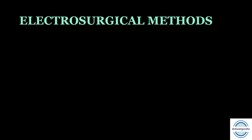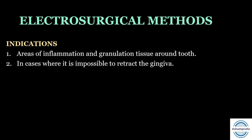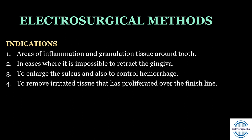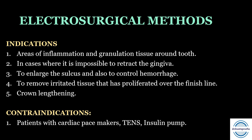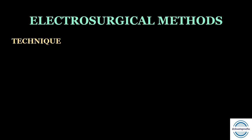Indications for electrosurgical methods: areas of inflammation and granulation tissue around the tooth; cases where it is impossible to retract the gingiva with retraction cords; to enlarge the sulcus and control hemorrhage; to remove irritated tissue that has proliferated over the finish line; and for crown lengthening. Contraindications: patients with cardiac pacemakers or insulin pumps; conditions with delayed healing such as debilitating diseases or radiation therapy. These are commonly asked in MCQs.